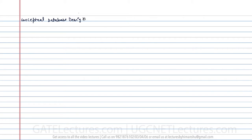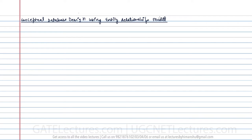We are going to start with the conceptual database design using the entity relationship models, or ER models. For that, first of all we need to study some of the basic terminologies which we use in the ER model. So this is the conceptual database design using the entity relationship model. We have to study about the different components of ER models, which act as basic terminologies used throughout the ER model.